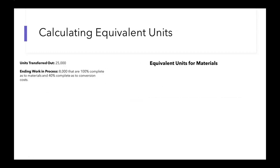Let's first focus on the equivalent units for materials. What we will do is take our units transferred out and then add in our ending work in process. For materials, we're told that our ending work in process is 100% complete as to materials, so we're going to add in all 8,000 of those units. So our equivalent units for materials will be 33,000.